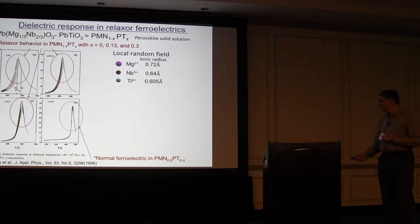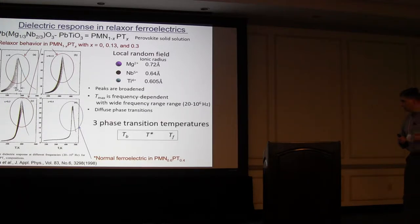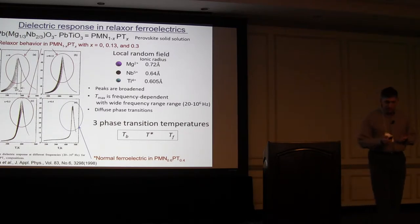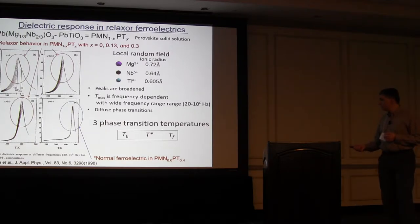This is a lead magnesium niobium oxide with a lot of lead titanate — more of a normal ferroelectric — but if you include less lead titanate, it shows these frequency dispersions. If you monitor this as a function of temperature, three transition temperatures have been characterized, and they go by the names Burns Temperature, T-Star, and Freezing Temperature.